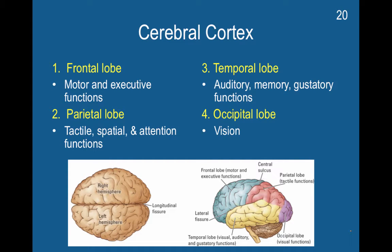As mentioned in the last video, we're going to be spending the most time on regions within the forebrain and regions within the diencephalon, which include the thalamus and the hypothalamus. Within the cerebral cortex, we have four lobes.